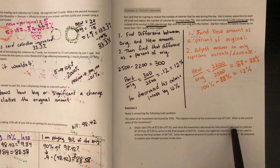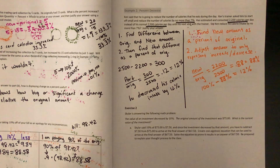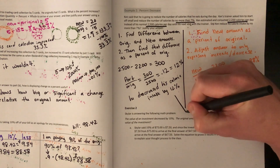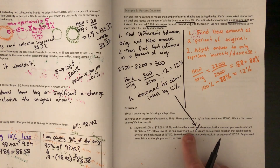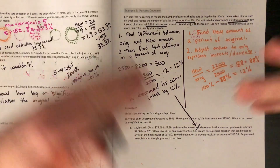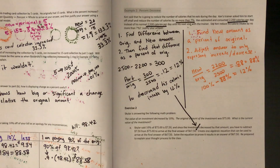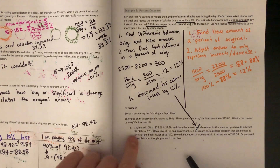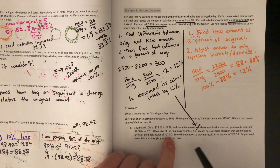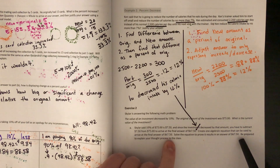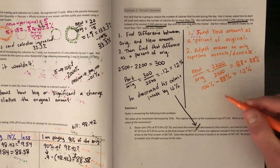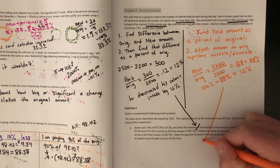Since the investment decreased by that amount, you subtract $7.50 from $75 to arrive at the final answer of $67.50. That is correct — she essentially used strategy one, finding the difference and then finding that as a percent. Now the question asks us to create one algebraic equation that can be used to arrive at $67.50, which means using strategy two.